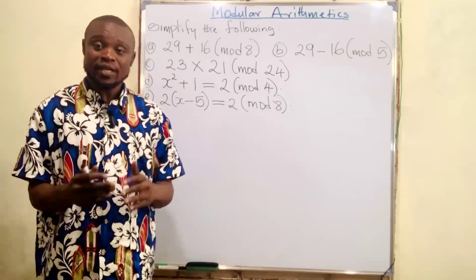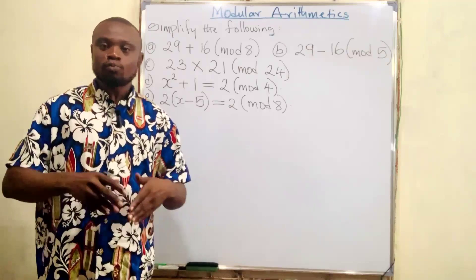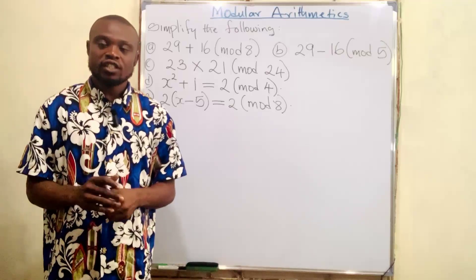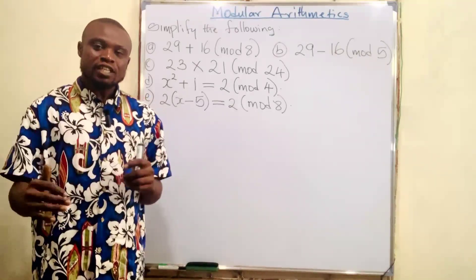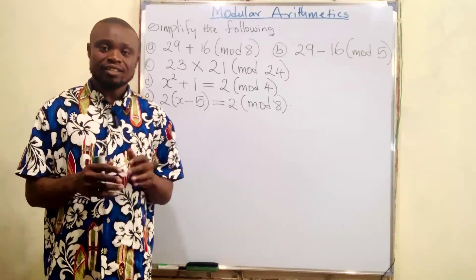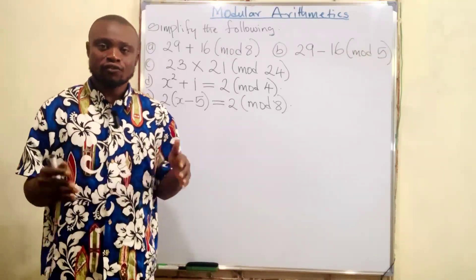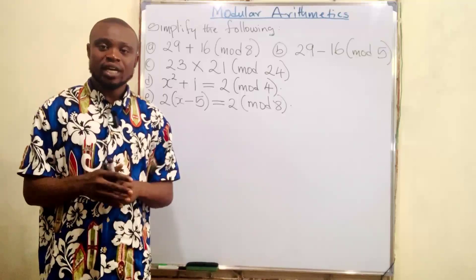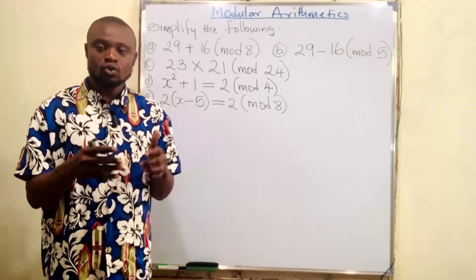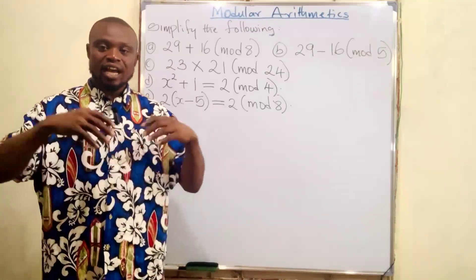An integer is basically a number from negative infinity to positive infinity — very large numbers. The fixed number refers to a base, just like we have in number bases: base two, base three, base four, base five, base six, and so on. In modular arithmetic, those bases are called modes — mode three, mode four, mode five, mode six, mode seven, mode eight, and so on.